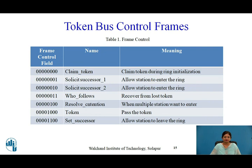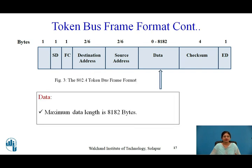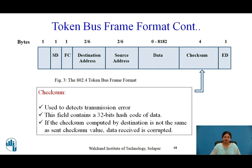The destination and source address fields support individual, group, and local addressing, similar to IEEE 802.3. The data field has a maximum length of 8182 bytes, which is five times more than 802.3 Ethernet. The checksum field is used to detect transmission errors, containing a 32-bit hash code of the data. If the checksum computed by the destination does not match the sent checksum value, the received data is considered corrupted and the frame is discarded.